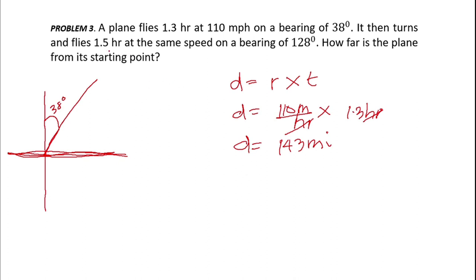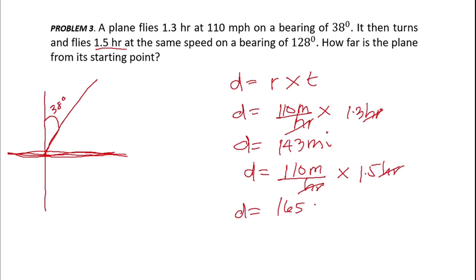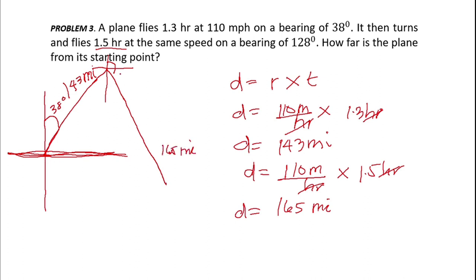For the second leg: D equals 110 miles per hour times 1.5 hours, which equals 165 miles. The plane first travels 143 miles at bearing 38 degrees. Then it heads on bearing 128 degrees. Since 128 minus 90 equals 38, the extra angle beyond 90 is 38 degrees, so the bearing of 128 degrees corresponds to 38 degrees past due east.